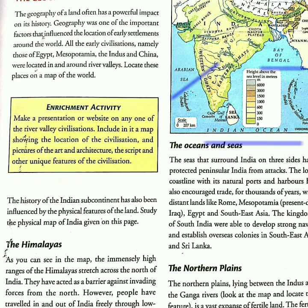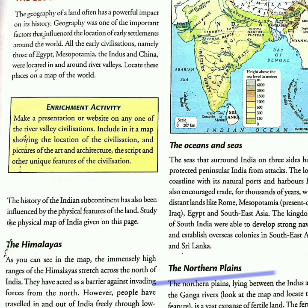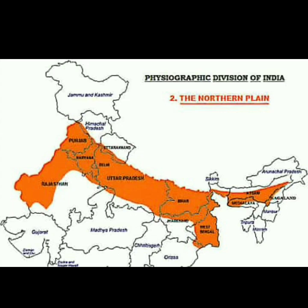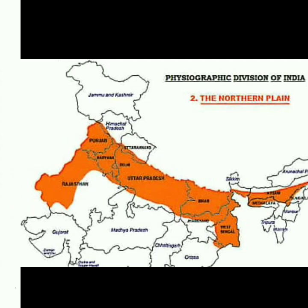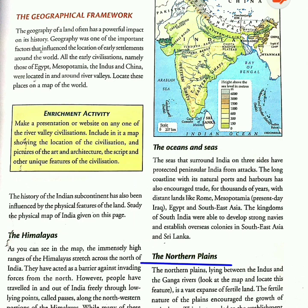The kingdoms of South India were able to develop strong navies and establish overseas colonies in South East Asia. The northern plains — this figure represents the northern plains in the orange part. The northern plains of India are formed by three river systems: the Indus, the Ganga, and the Brahmaputra. These plains extend approximately 3,200 km from west to east. The northern plains are a vast expanse of fertile land. The fertile nature of the plains encouraged the growth of agriculture, which led to the establishment of many powerful kingdoms and empires here, like those of the Mauryas and the Guptas.